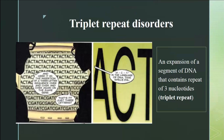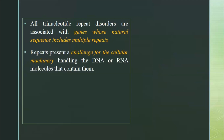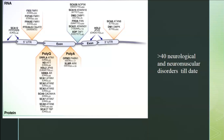Triplet repeat disorders simply mean three nucleotides are getting repeated again and again, but if it goes beyond a particular range, a problem arises. These disorders occur in genes whose natural sequences contain multiple repeats. The DNA or RNA machinery gets confused when handling these repeats, causing expansion or contraction. When DNA repeats are transcribed or replicated, there is a high chance of error. More than 40 neurological and neuromuscular disorders are associated, involving different parts of the gene.